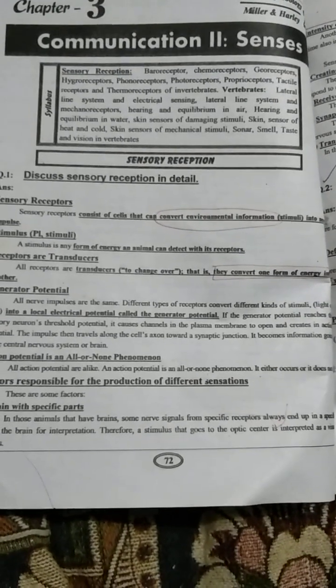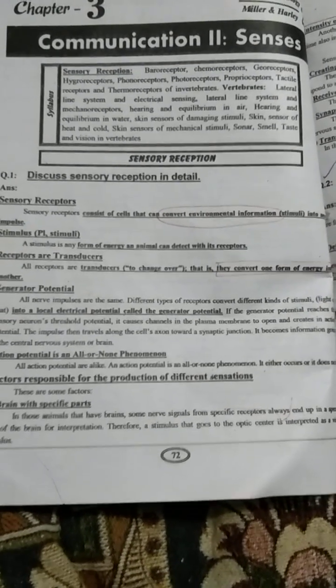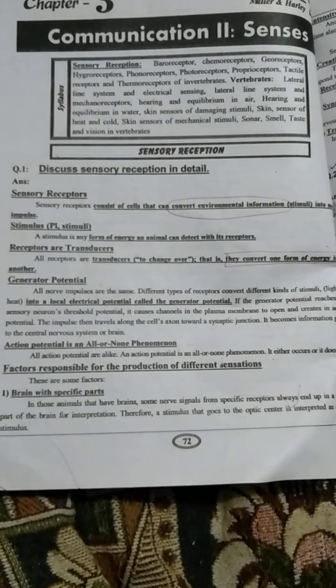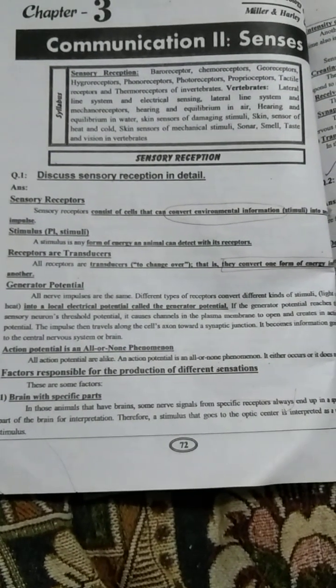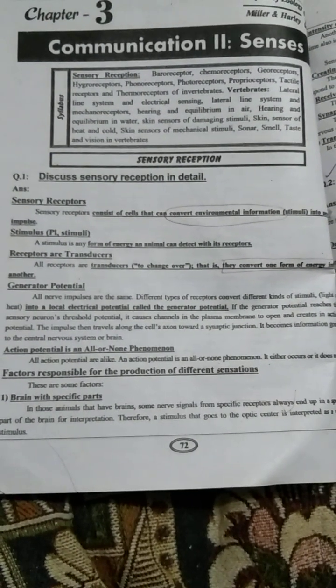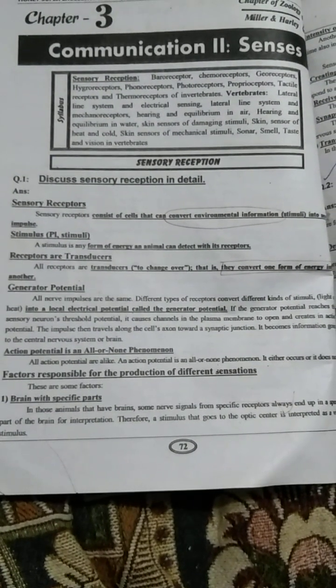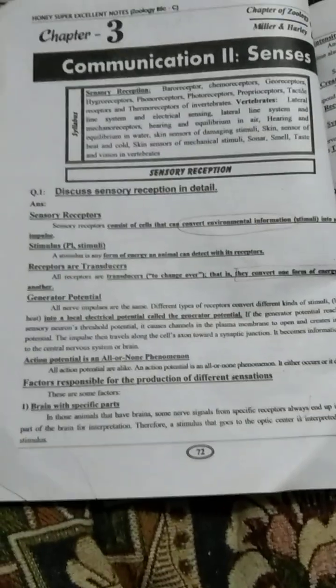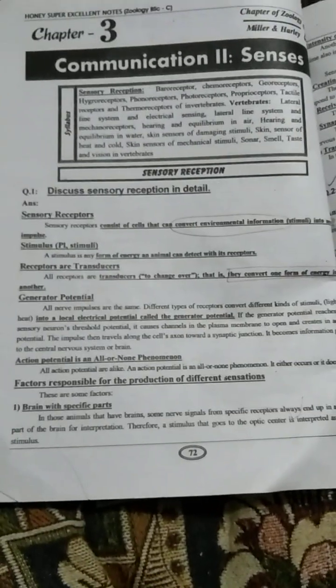Sensory receptors consist of cells that can convert environmental information stimuli into nerve impulses. A stimulus, plural stimuli, is any form of energy an animal can detect with its receptor.